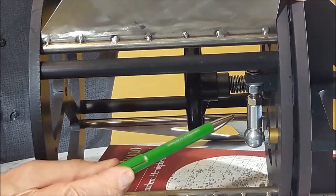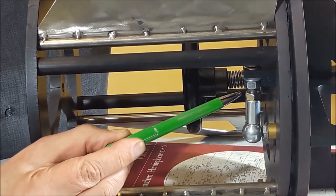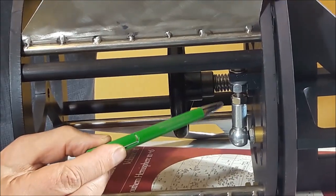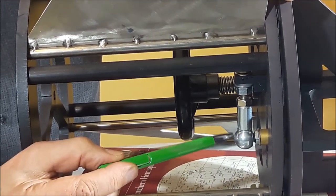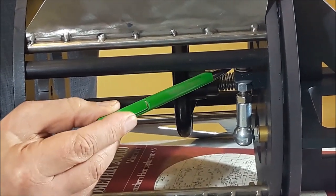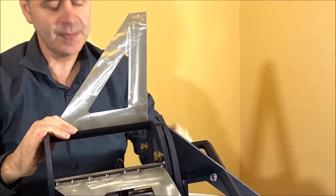The other feature of the collimation is this screw that is fine-tuning the rotation of the secondary mirror. It is based on a ball joint and this screw that is controlling the position.